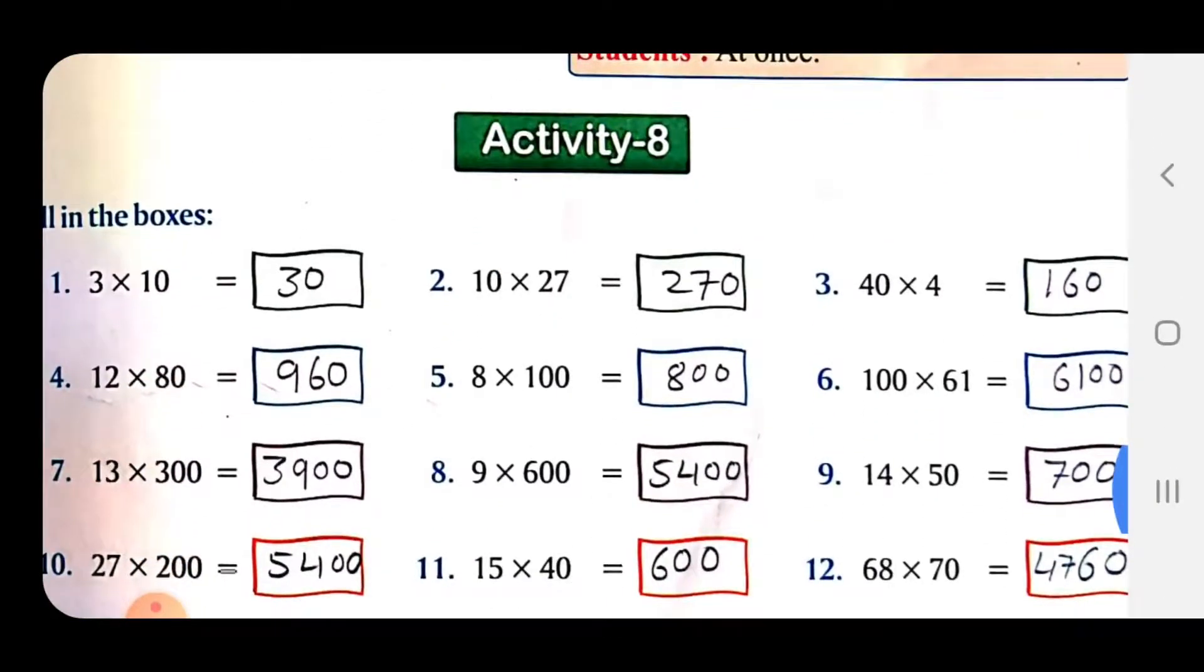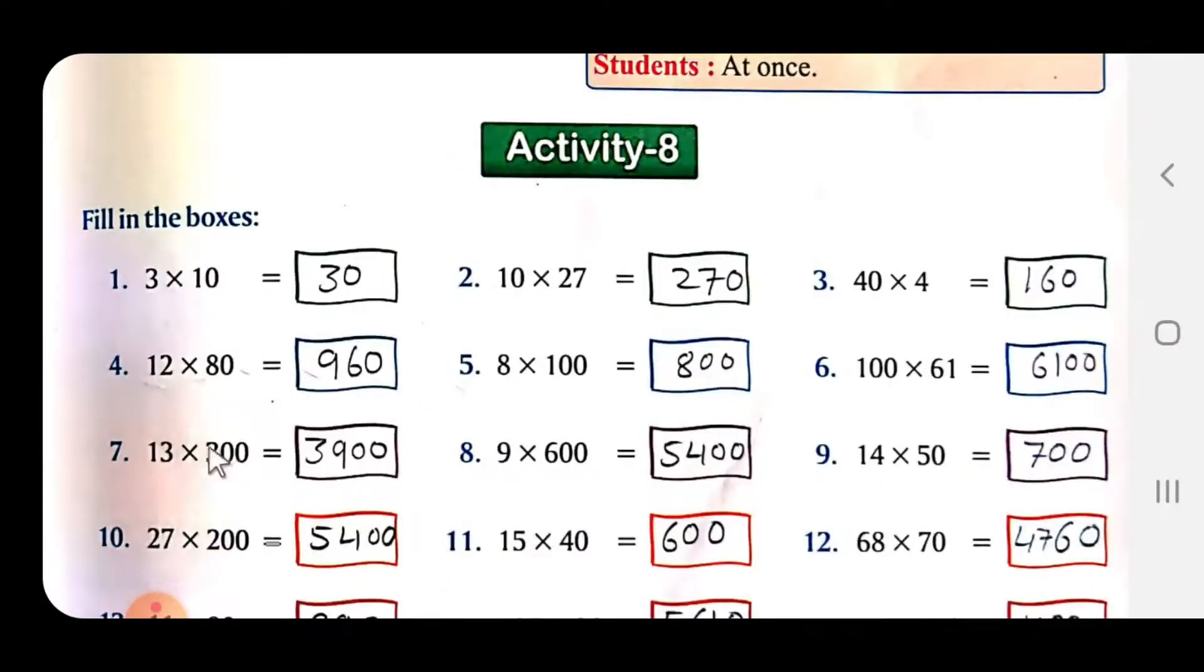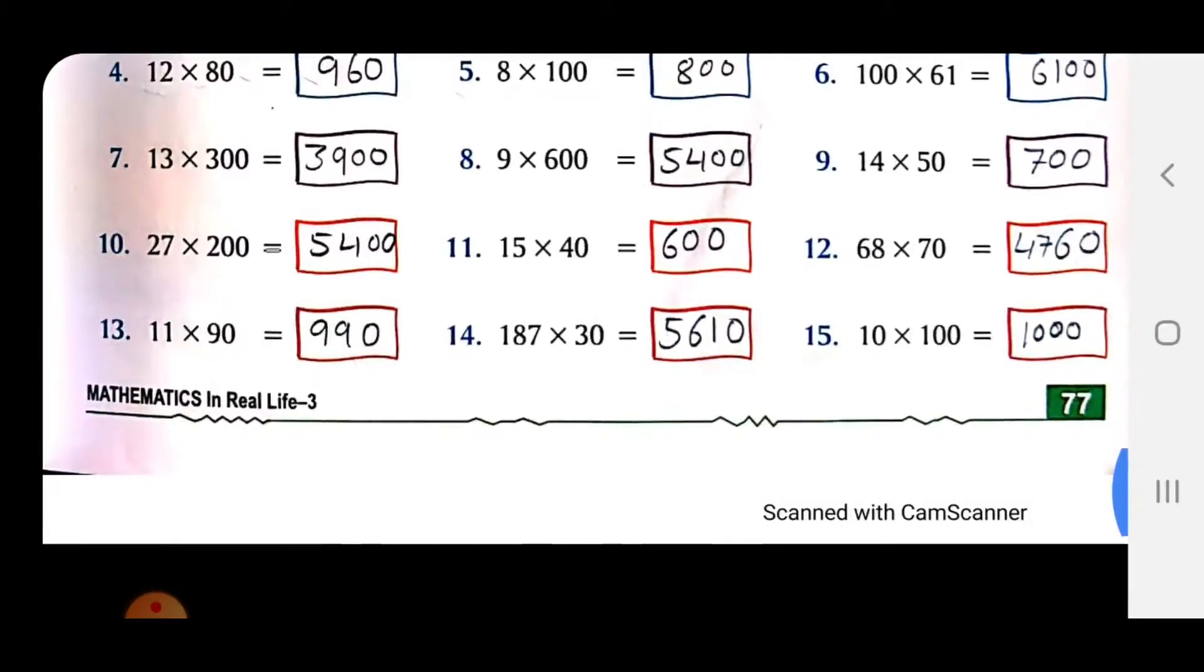Now Activity 8, you have to do in textbook. 3 multiply 10 = 30. 10 multiply 27 = 270. 40 multiply 4 = 160. 12 multiply 80 = 960. 8 multiply 100 = 800. 100 multiply 61 = 6100. 13 multiply 300 = 3900. 9 multiply 600 = 5400. 14 multiply 50 = 700. 27 multiply 200 = 5400. 15 multiply 40 = 600. 68 multiply 70 = 4760. 11 multiply 90 = 990. 187 multiply 30 = 5610. 10 multiply 100 = 1000.